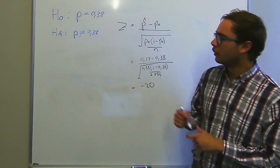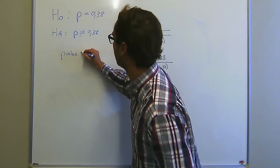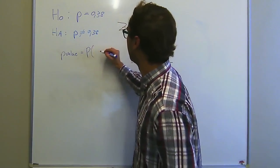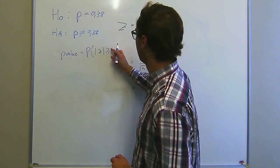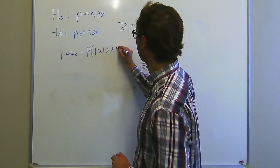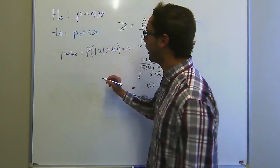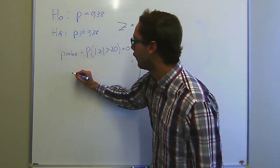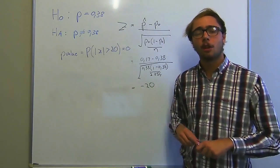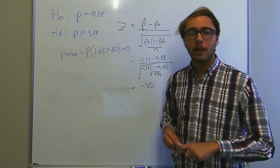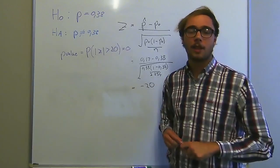Now that we've worked out our Z, we can say our P value equals the probability that the absolute value of Z is bigger than 20. And this gives us 0. So our P value is very small and therefore we can reject the null hypothesis. Because we rejected the null hypothesis, we can say that there's strong evidence that the proportion of Americans who use their cell phones for internet browsing is different than the Chinese proportion.